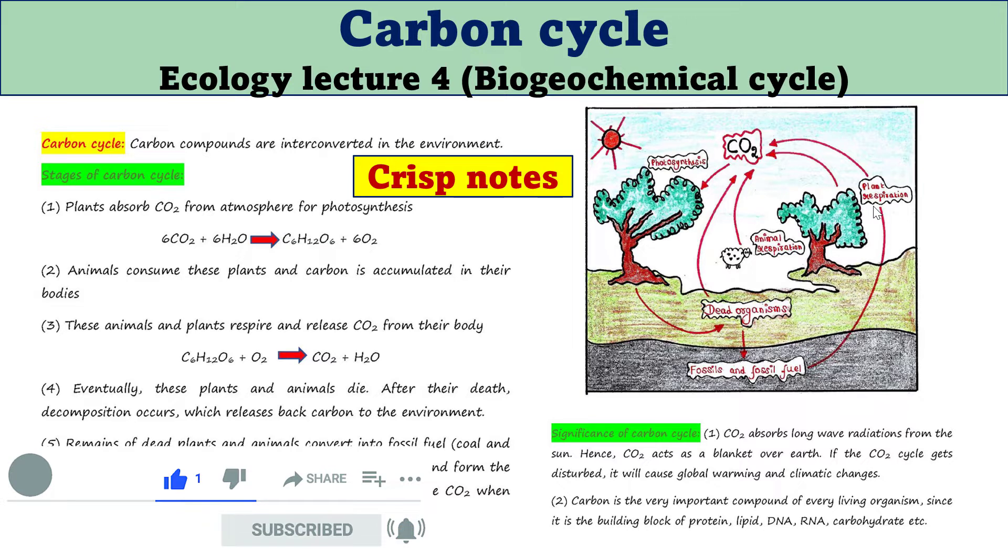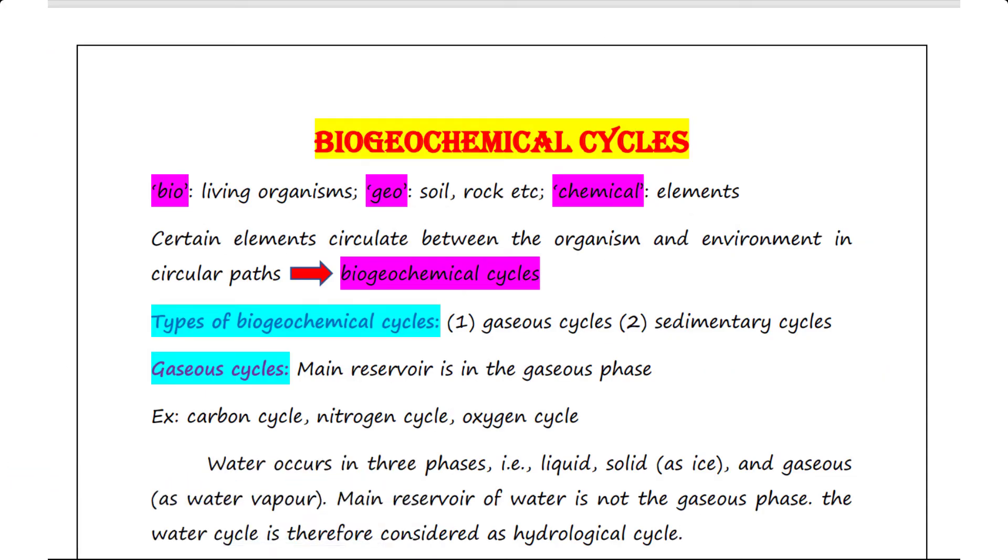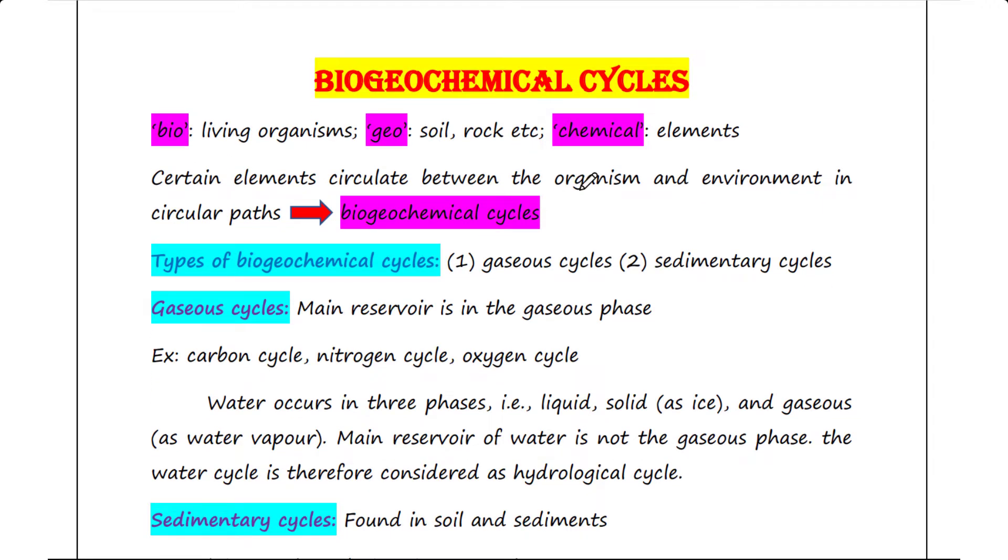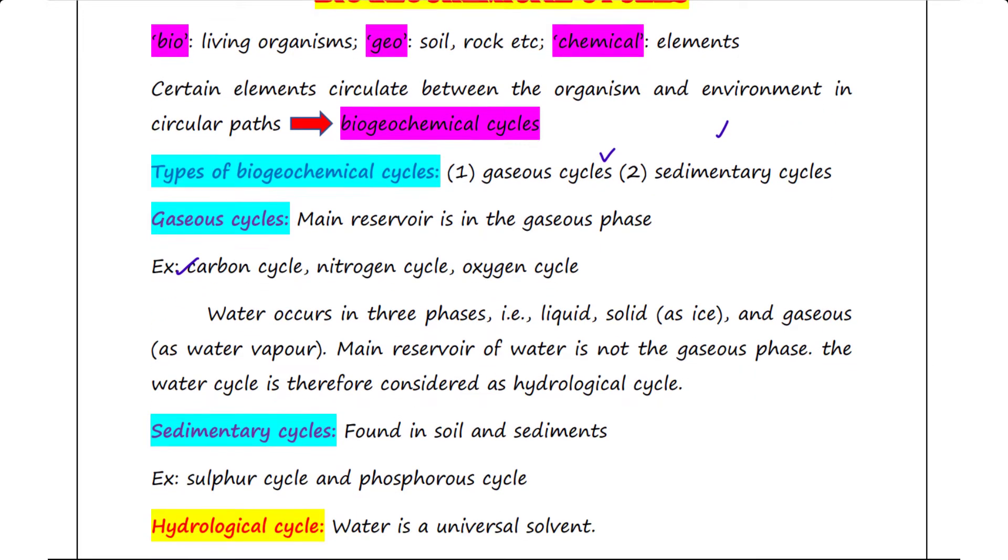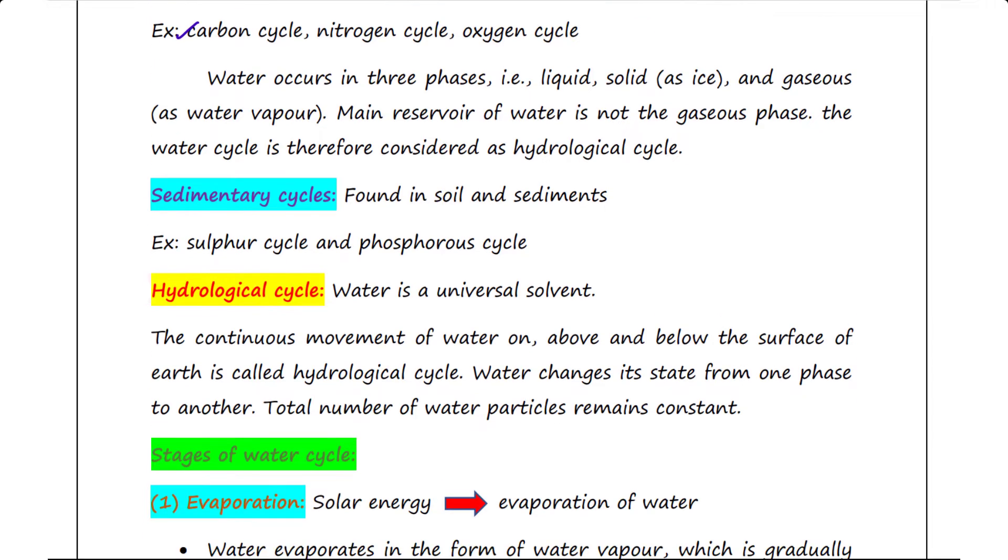In our last lecture, we talked about biogeochemical cycles. We know that biogeochemical cycles are of two types: gaseous and sedimentary cycles. We have seen that the carbon cycle is a type of gaseous cycle.